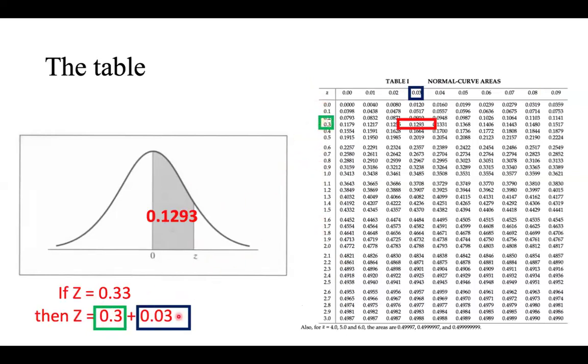And then the black box in here would be 0.03, and that would be the row in here. And they merge to 0.1293, and that would be the area under the curve, this specific area that is shaded.